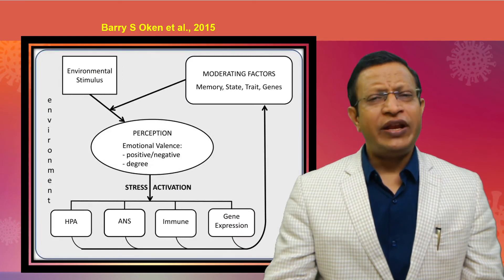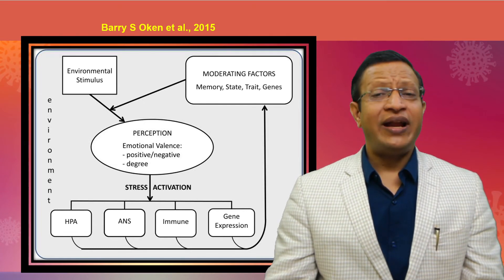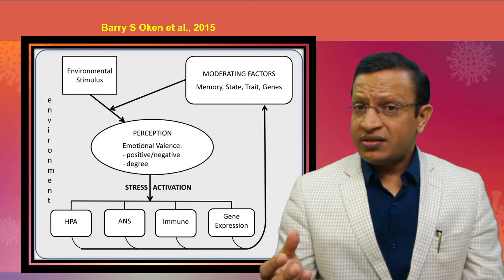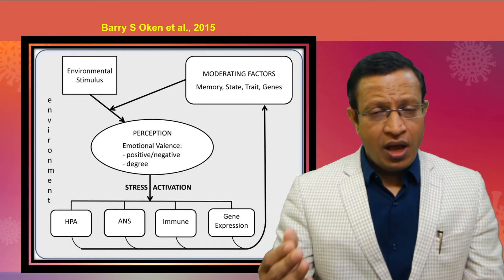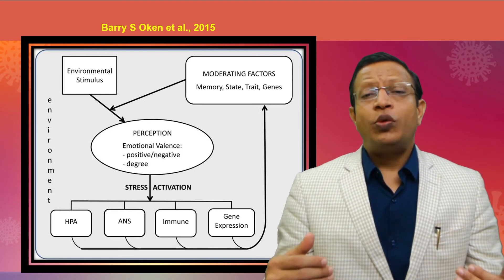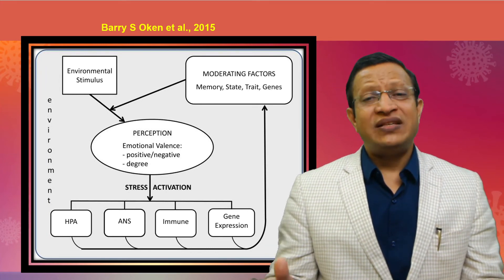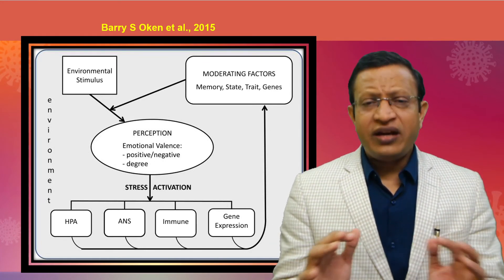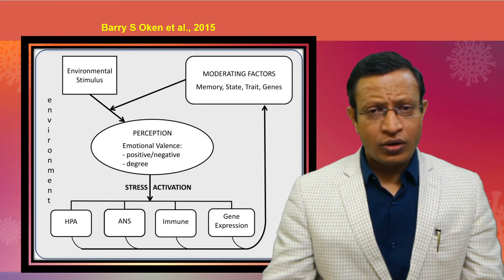There has been a very interesting article published by Barry O'Connor et al., which discussed a similar hypothesis but added two more important things apart from the HPA axis: the autonomic nervous system, the immune system, and gene expression. Gene expression means that whenever the body is exposed to an extreme environment, the genes are expressed to protect the body or animal. Moderating factors of memory, state, and trait also play an important role in how future stress will be handled.